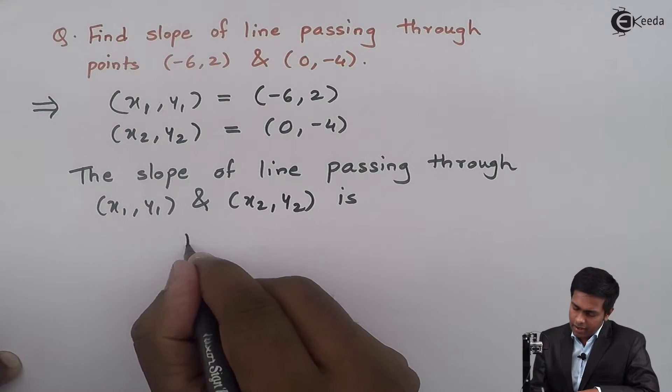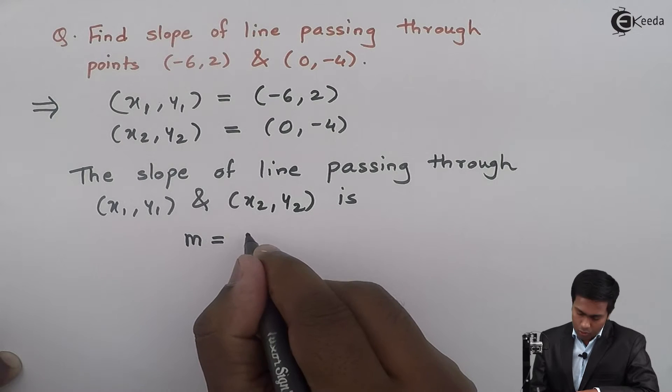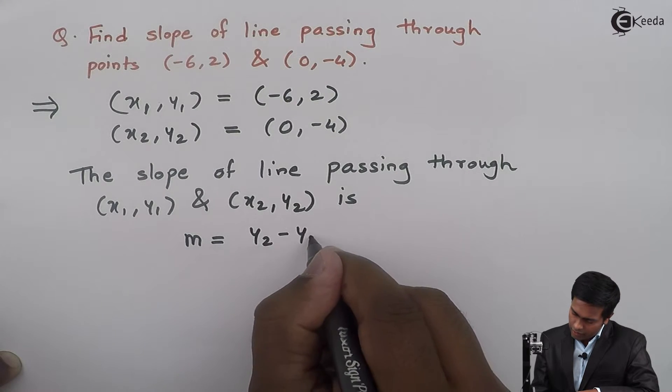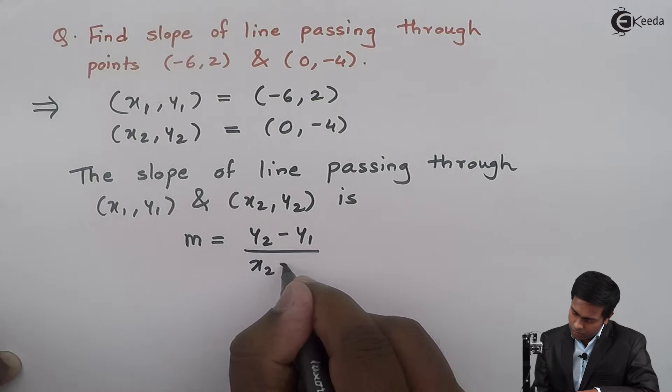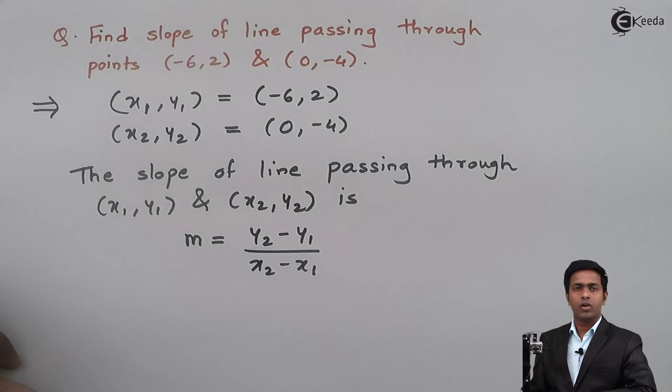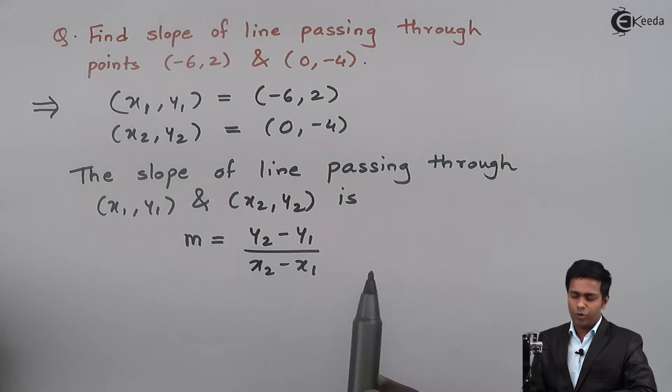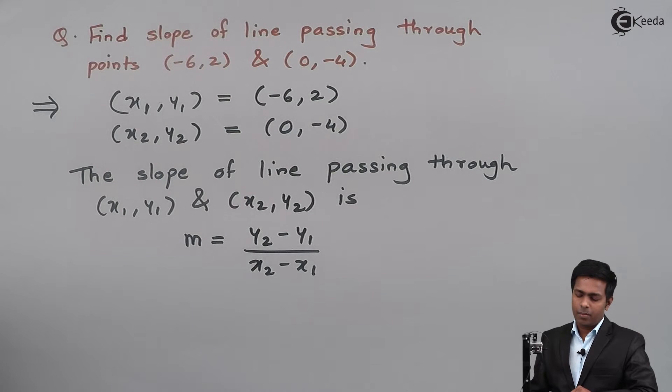It is given by m = (y₂ - y₁) / (x₂ - x₁). So this is the formula to find the slope of a line passing through two points.